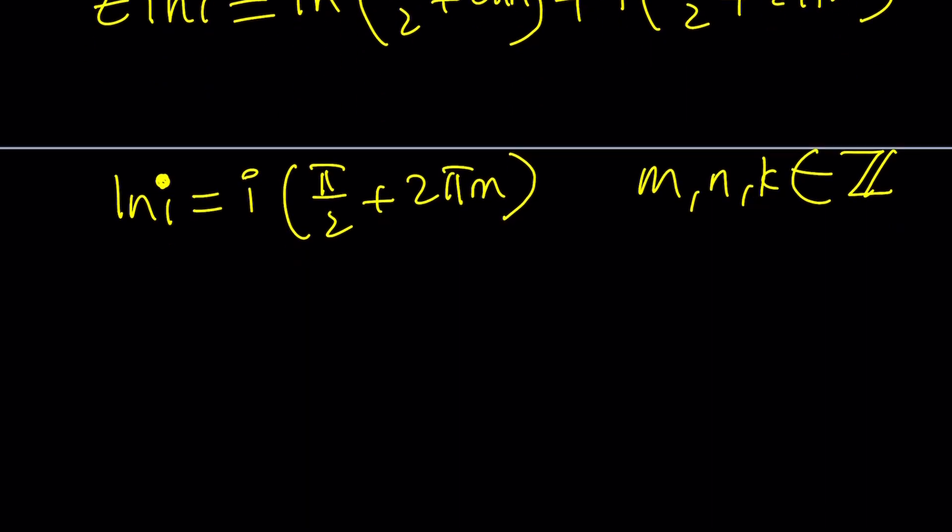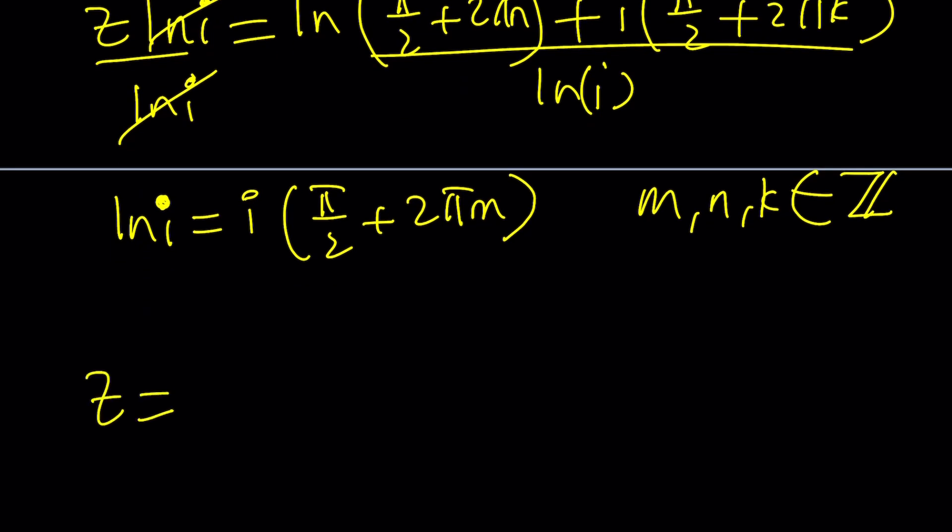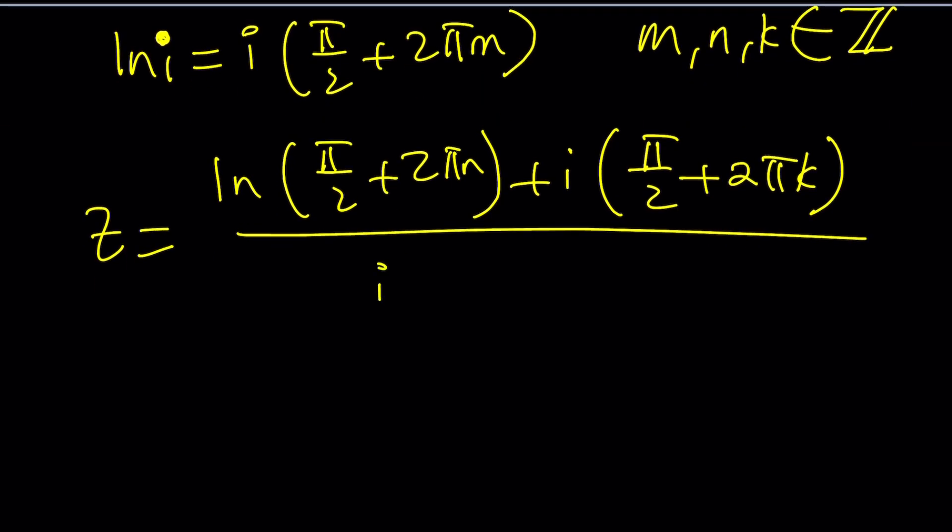Let's divide both sides by ln i and replace ln i with i times pi over 2 plus 2 pi m. Now let's isolate z and replace ln i with that. So z is going to be ln pi over 2 plus 2 pi n plus i times pi over 2 plus 2 pi k, all divided by ln i which is i times pi over 2 plus 2 pi m. All of these are integers.